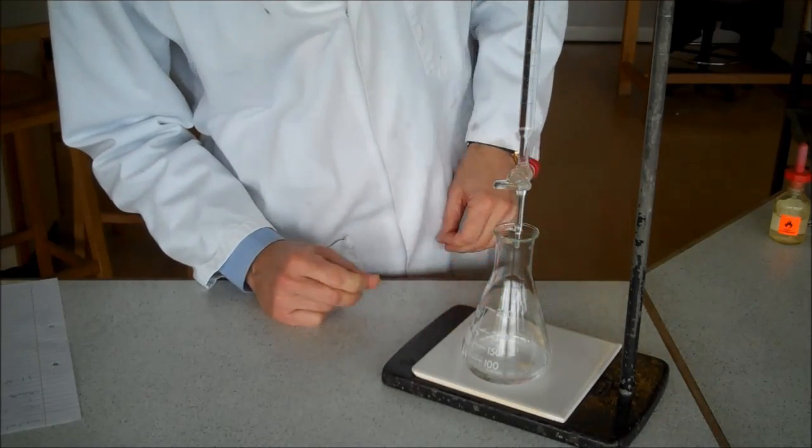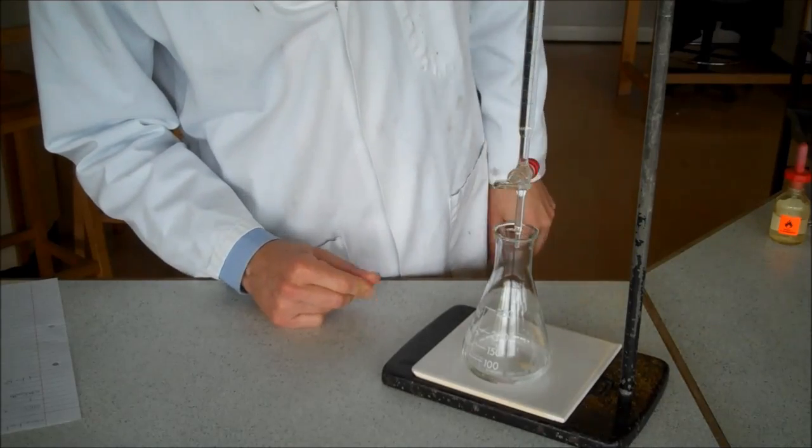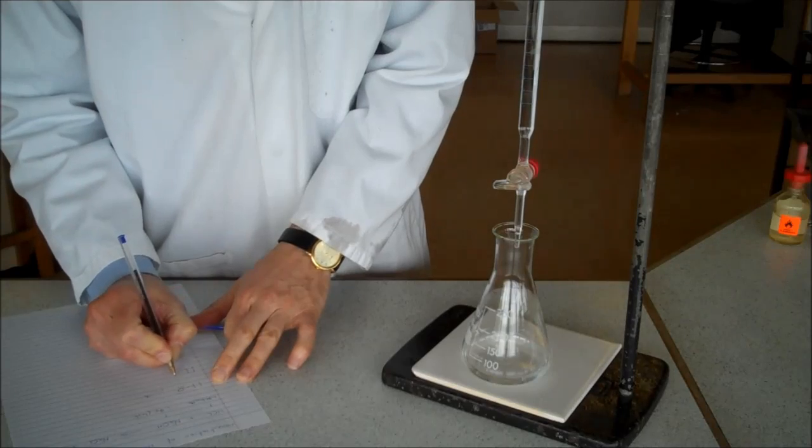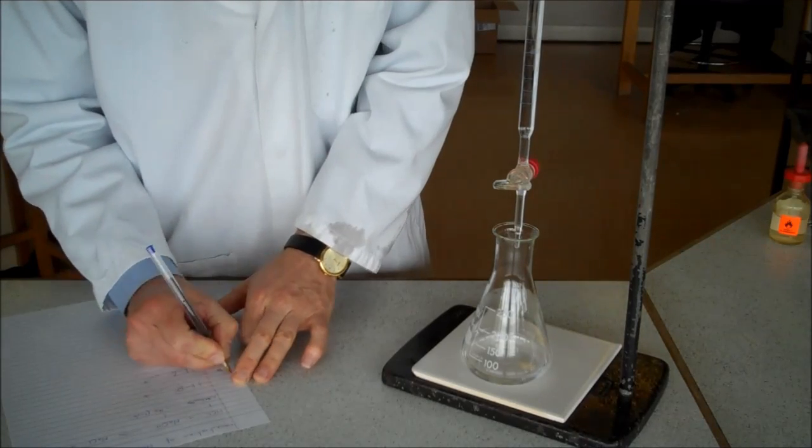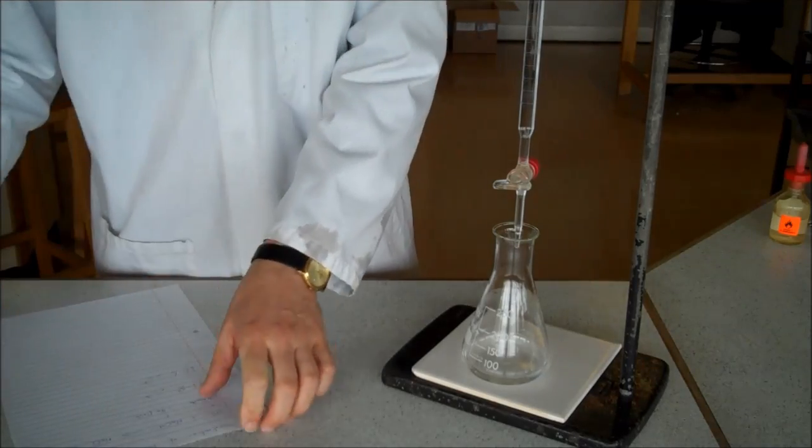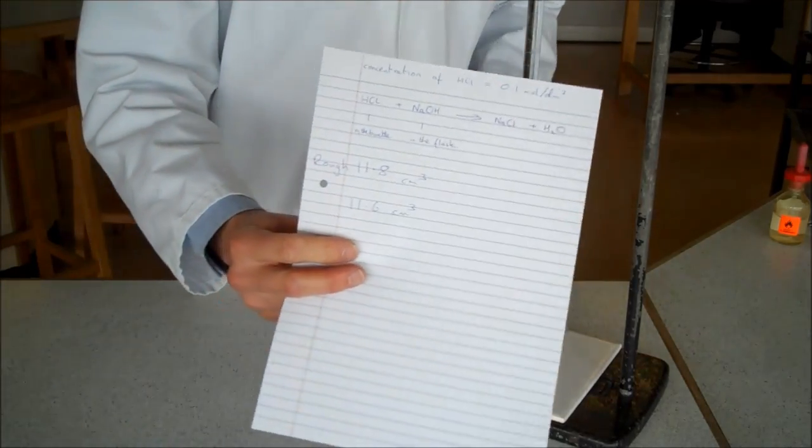So this time, I look at my result, I subtract it from my initial reading, and I find I've actually, this time, added 11.6 centimetres cubed. My rough result was 11.8. My first accurate was 11.6.